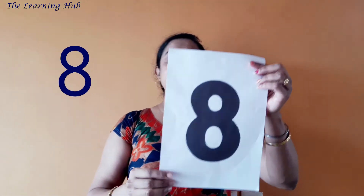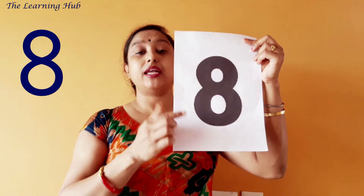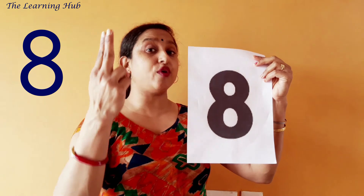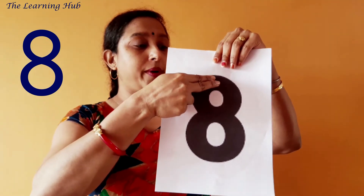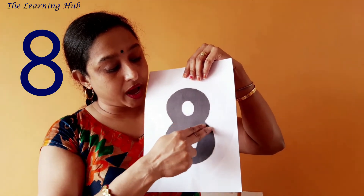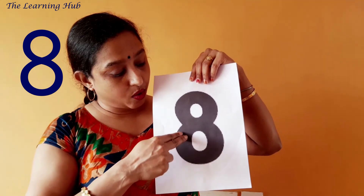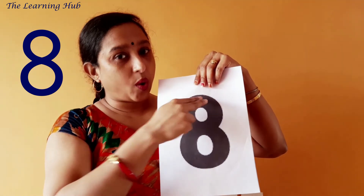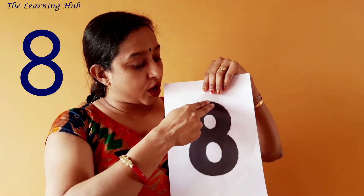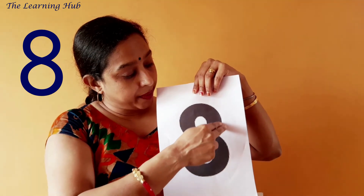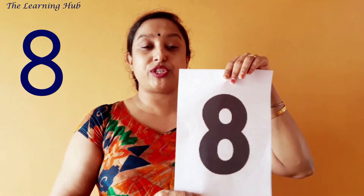So let's see how the number eight looks like. This is number eight. Everyone repeat after me: number eight! Now let's trace it. Join these two fingers, start from top, then make a C curve, then go down, then go up and touch here. One more time: start from top, draw a C curve, then go down, then turn, then go up and touch here. This is the formation of number eight.